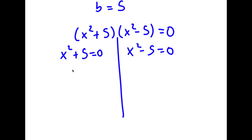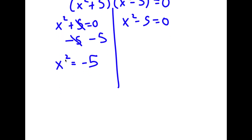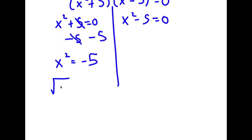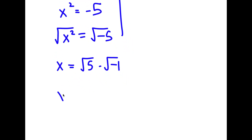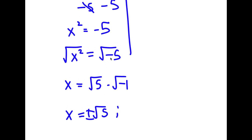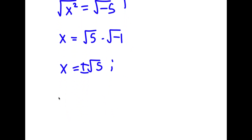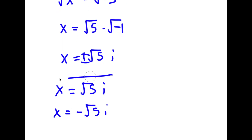For x squared plus 5 equals 0, I subtract 5 on both sides, so x squared equals negative 5. Taking the square root of both sides, I get x equals the square root of 5 times the square root of negative 1. Since the square root of negative 1 is i, x equals plus or minus square root of 5 times i. So x equals square root of 5i and x equals negative square root of 5i — these are two of my solutions.